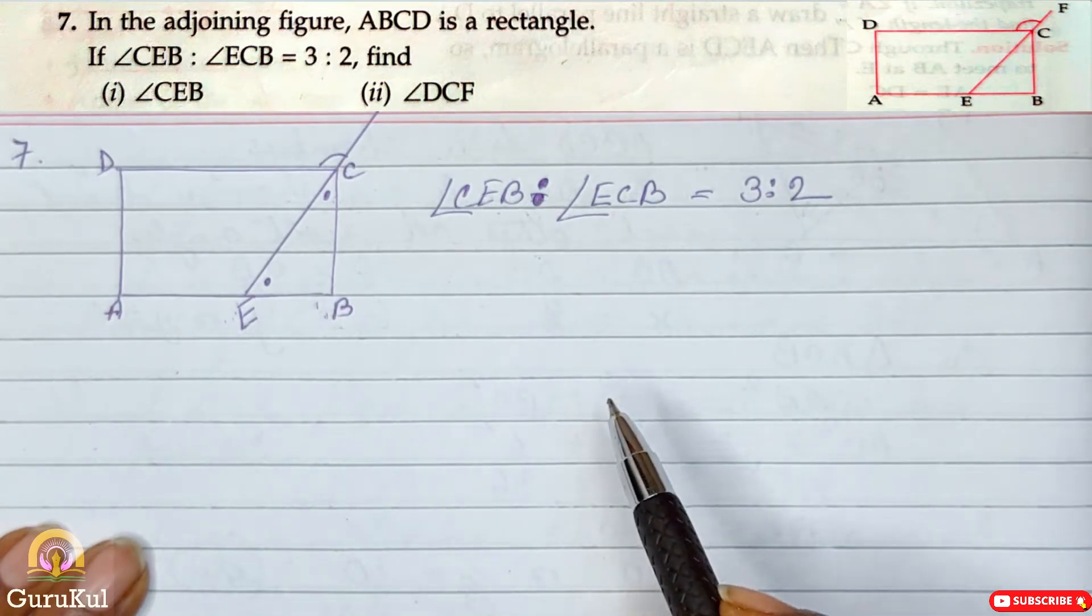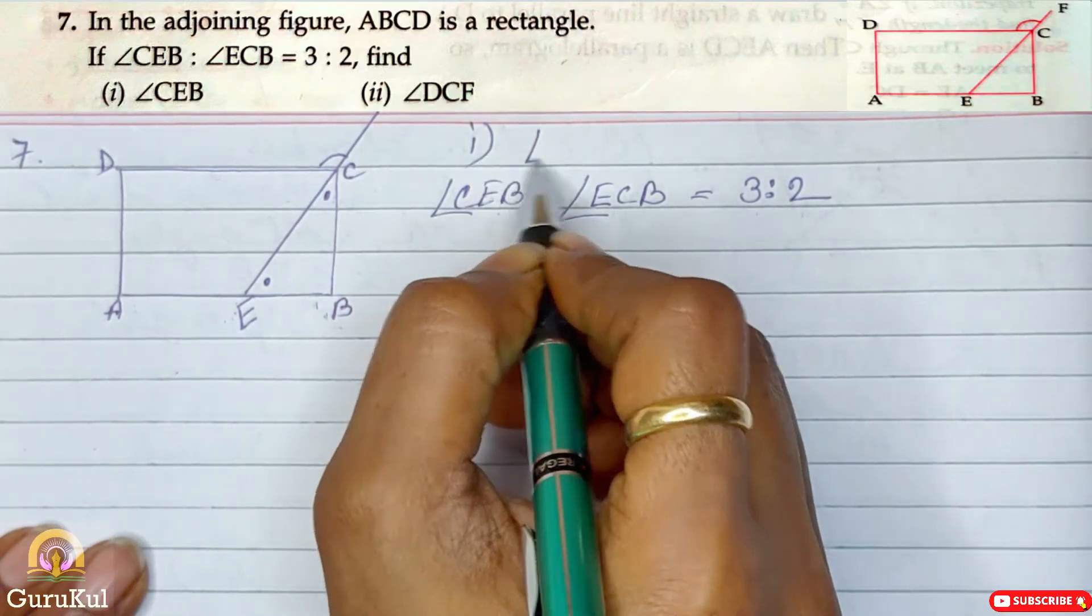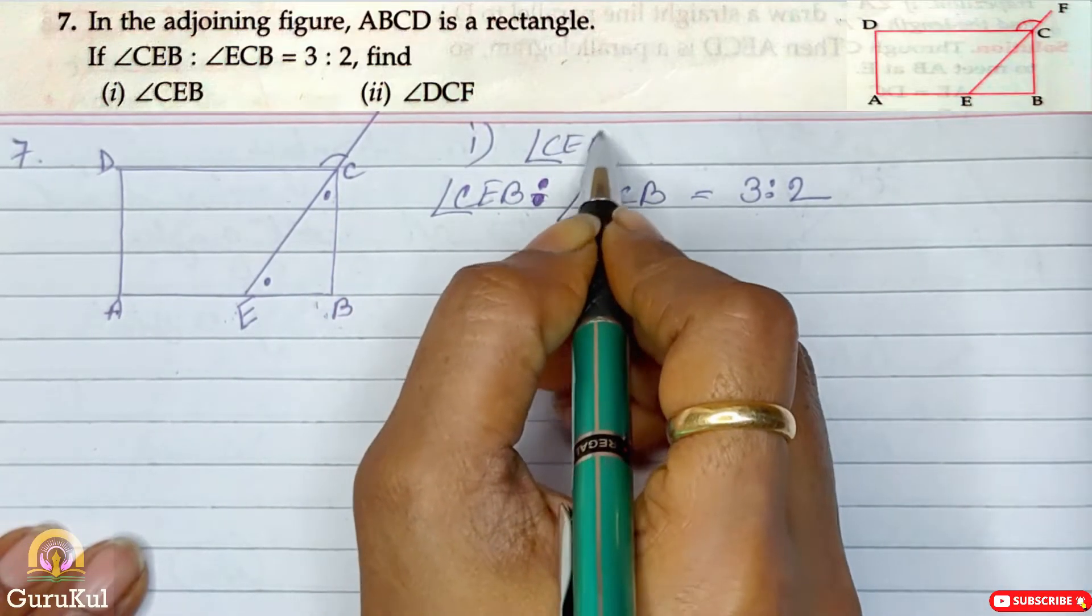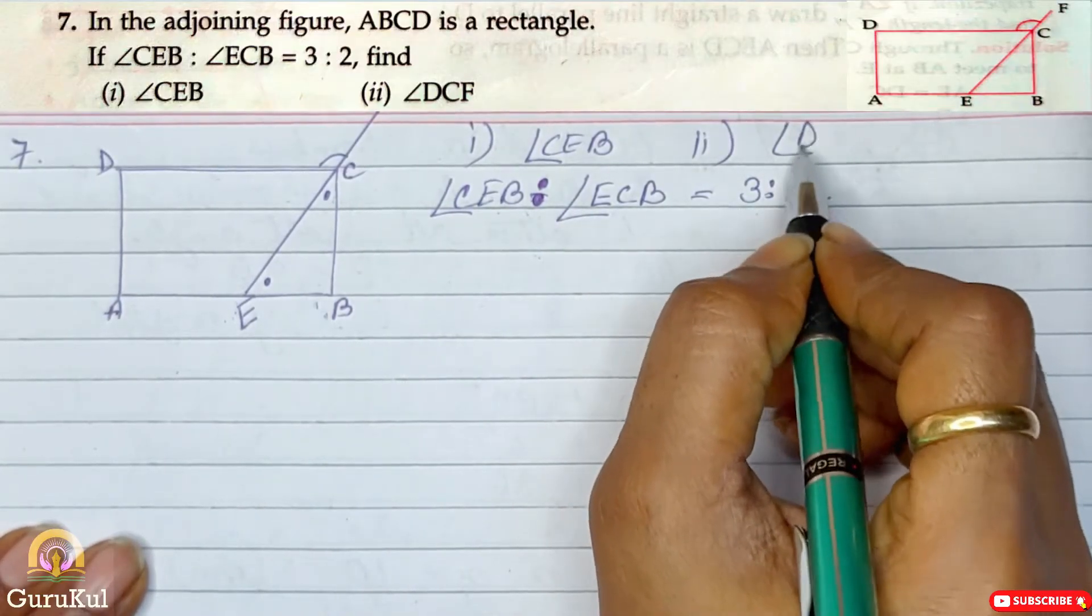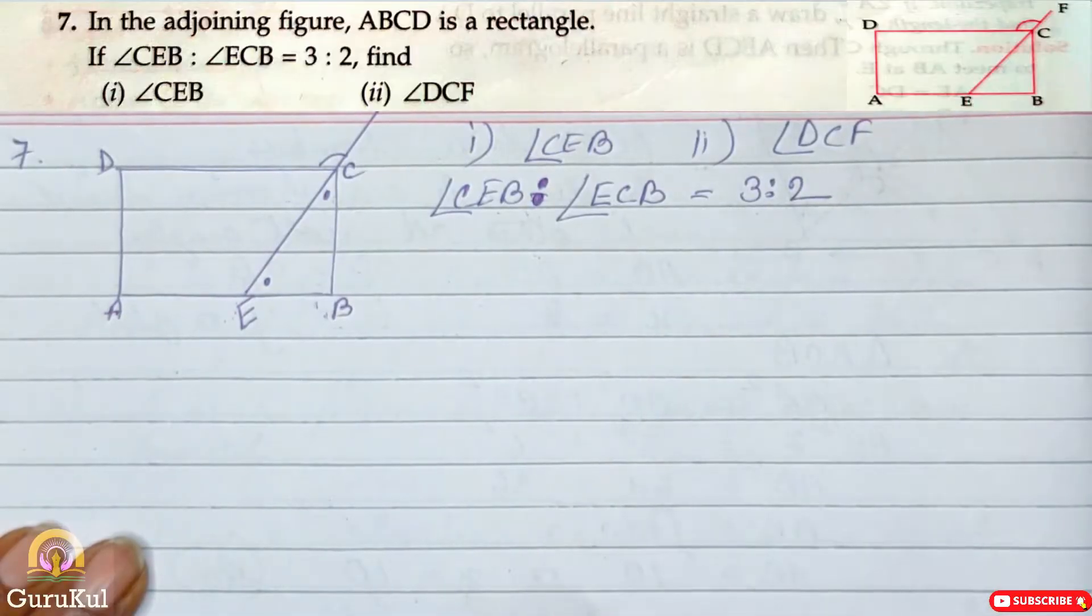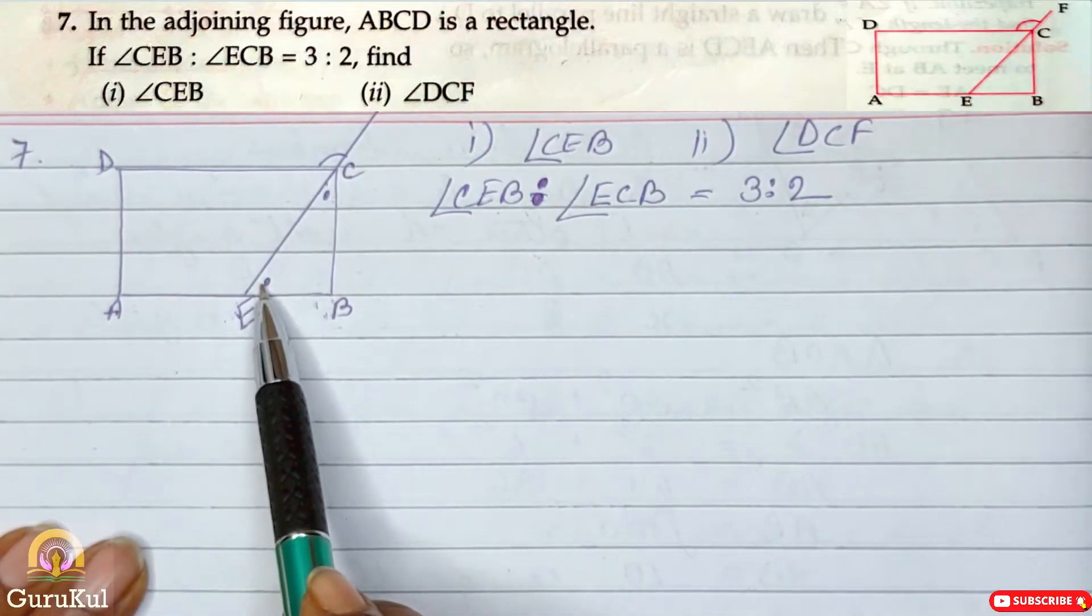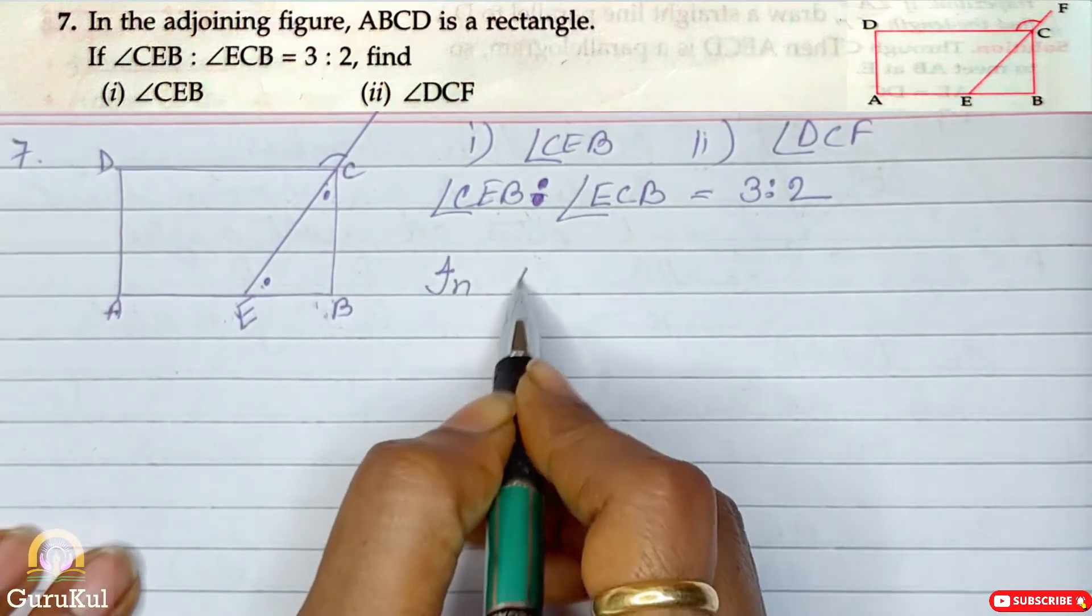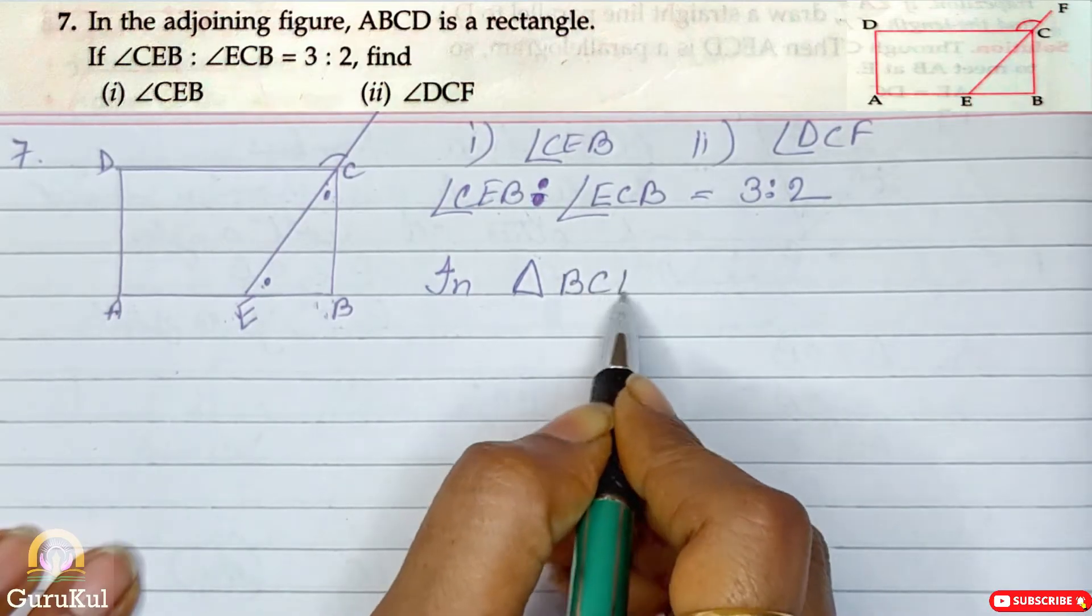And then we need to find, what do we have to find? So first one, angle CEB and secondly, angle DCF. So first one, angle CEB, it means this angle. So let us begin.